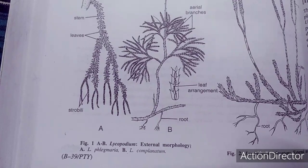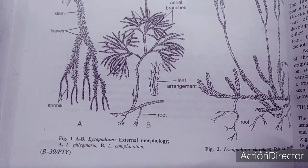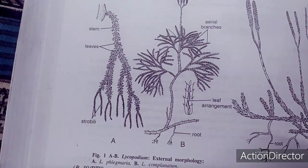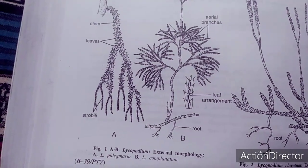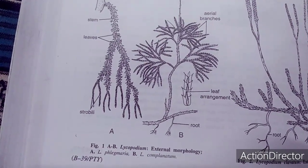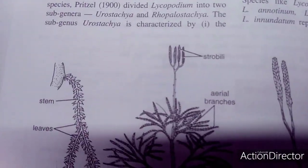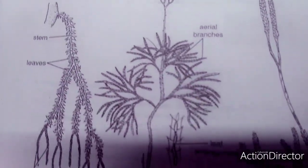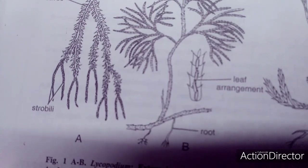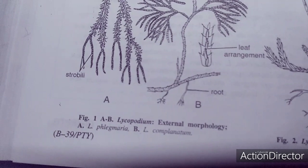The structures shown include Lycopodium campanulatum, Lycopodium phlegmaria, and Lycopodium clavatum — these are different structures of the sporophyte. The sporophyte consists of root, stem, and leaves. The uppermost part is the strobilus and aerial branching is present, along with leaf arrangement, rhizoids, and roots. This is the external morphology.